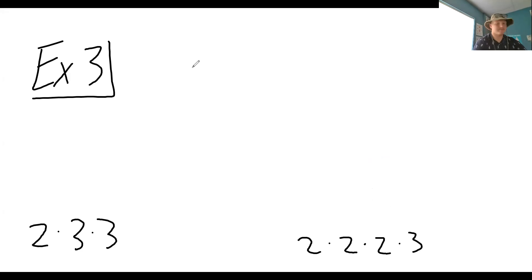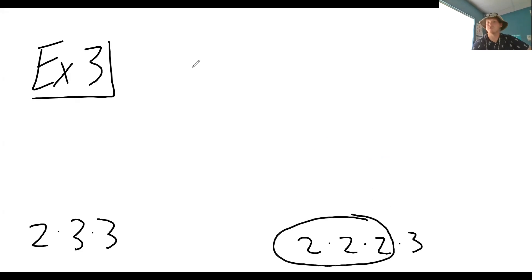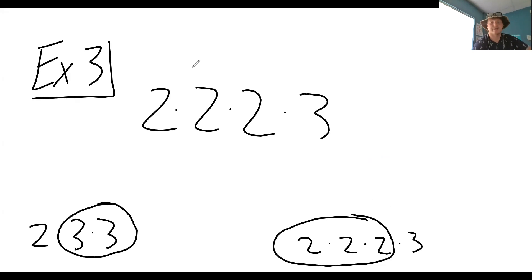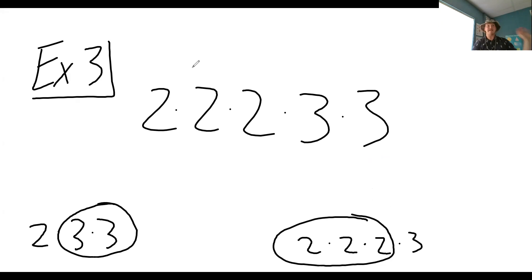I'm going to take the most amount of twos, which is over here — three twos, so two times two times two. And then over here I have two threes, so I would take three times three. With that, you are taking the highest count that you have within each factor.